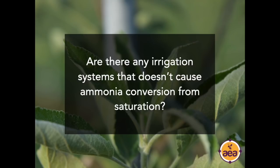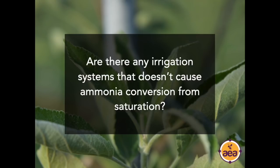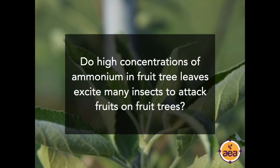Question from Nathan Lindar: are there irrigation systems that don't cause ammonia conversion from saturation? It's not the irrigation that is the challenge — it is saturation. Anytime you have saturated soil, whether from rainfall or any type of water addition, the saturation causes conversion to ammonium. Another way of saying saturation is the lack of gas exchange or airflow into the soil. Even a lack of gas exchange for 24 to 48 hours can be enough to trigger the conversion. How much nitrogen converts in that period depends on how robust and active your microbial activity is — the more active, the faster the conversion to ammonium.